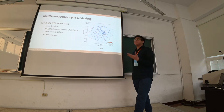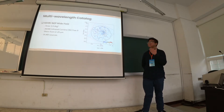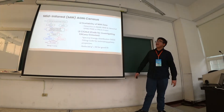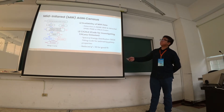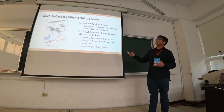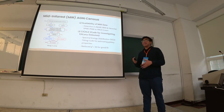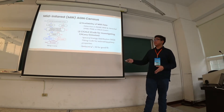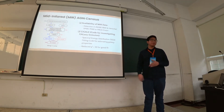I'd like to briefly discuss the catalogs I used. The first is the multi-wavelength catalog from Dr. Sung Jin Kim, with its area in square degrees and number of sources. The next is the mid-infrared census by Ting Wen Wang, where she ensured availability of mid-infrared data with detections in particular bands. She used a spectral energy distribution code named CIGALE to estimate galaxy properties, and we required the reduced chi-square to be less than 10 to ensure a good fit.